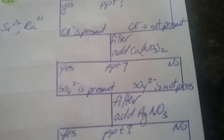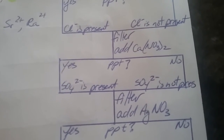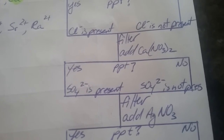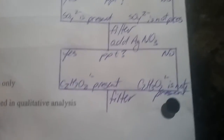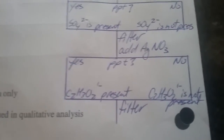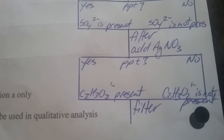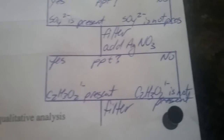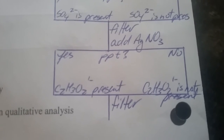If no precipitate forms in step two, then sulfate ions are not present. Filter again, then move to step three. Step three must be done third because silver ions are present throughout all three of the anions we're investigating. If a precipitate forms, the acetate ion is present. If not, the acetate ion is not present. Filter at this point.